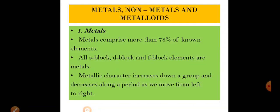Metals, non-metals, and metalloids: About 70% of elements in the periodic table are metals. All s-block, d-block, and f-block elements are metals. S-block has alkali and alkaline earth metals (soft metals). D-block has transition metals. F-block has inner transition metals. Only the p-block has a mix of metals, non-metals, and metalloids. Metallic character increases down the group and decreases across the period from left to right.